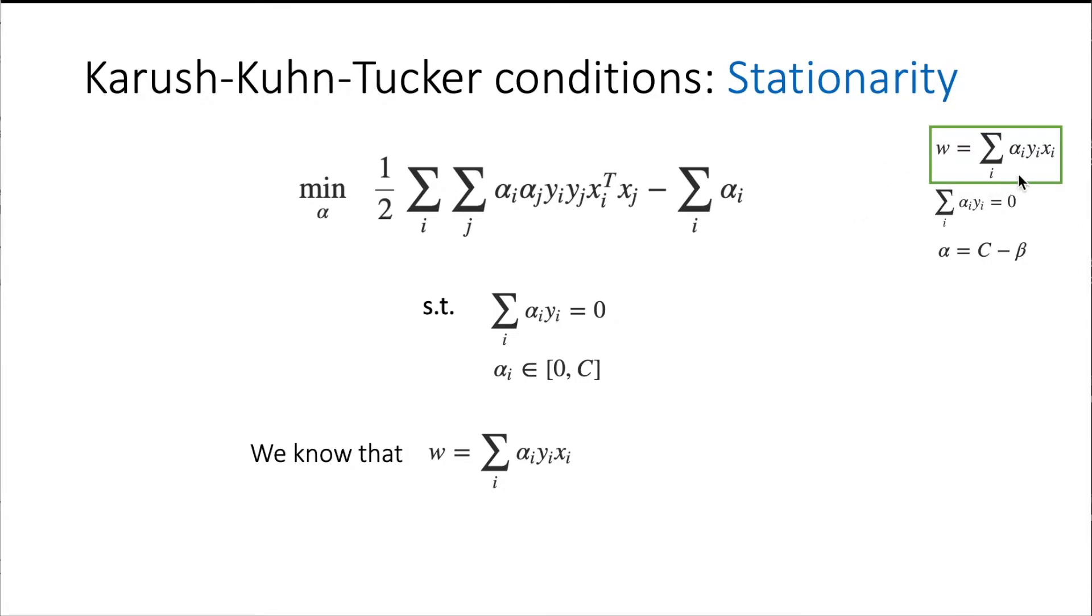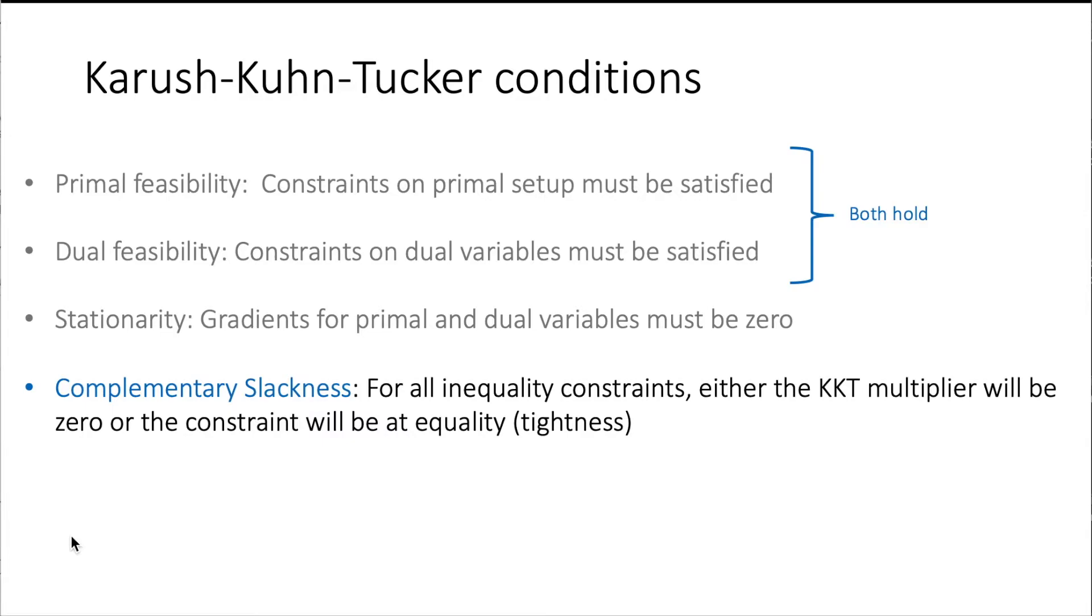So now since we already know w, we just need to find b. And now this is where the complementary slackness condition from Karush-Kuhn-Tucker comes in. Recall that so far we checked these three conditions.